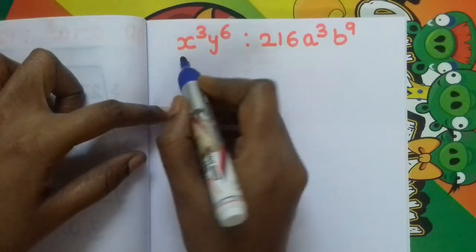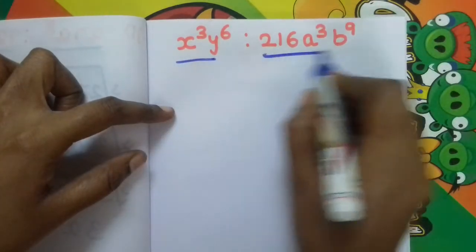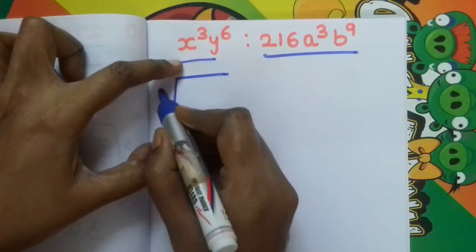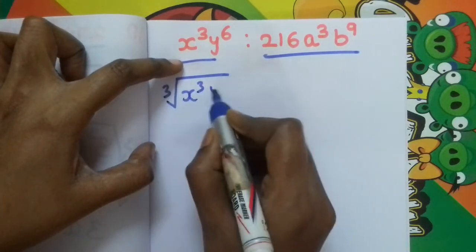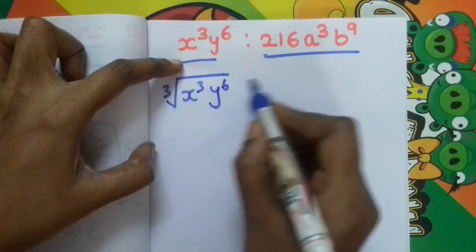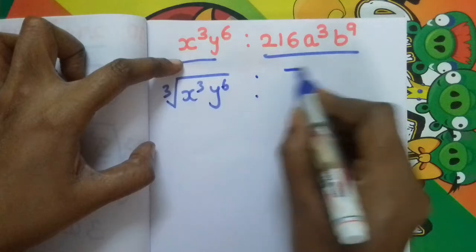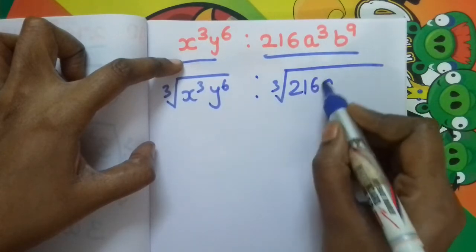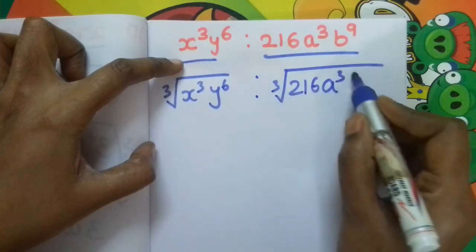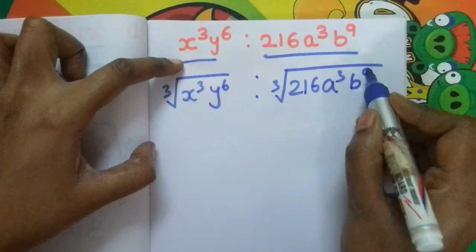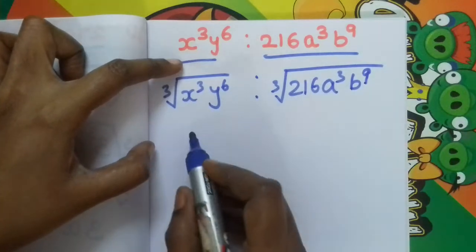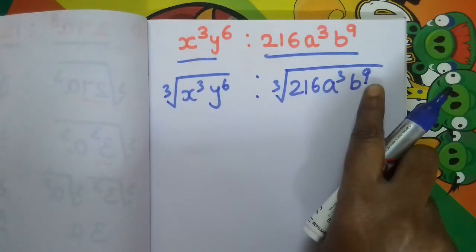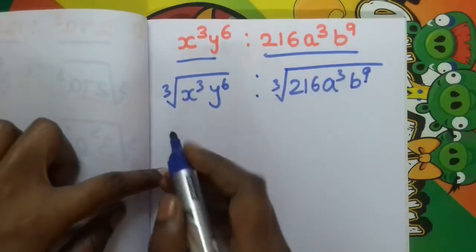Next question. This is your antecedent and this is your consequent, and this is the cube root you can apply. The antecedent is x cubed times y to the power 6. The consequent is 216 a cubed b to the power 9. Inside, b to the power 9 is in cube format, since 9 is a multiple of 3.